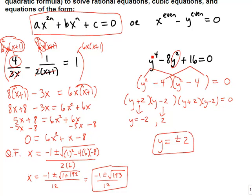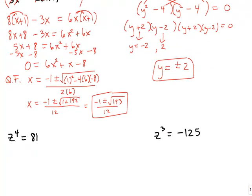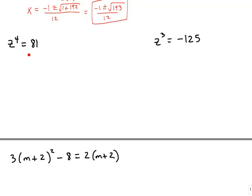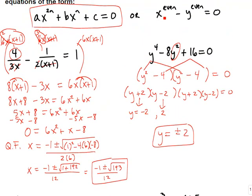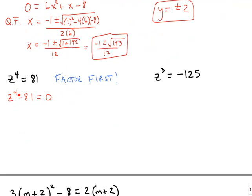Whenever the leading power is double the middle power, you can try factoring to solve this. The next two examples are not quadratics — we have a fourth degree and a third degree. My recommendation is to factor as much as you possibly can first, then fall back on the quadratic formula. For z⁴ = 81, first subtract 81 to the left side to get z⁴ − 81 = 0. You always want a zero when you're factoring.